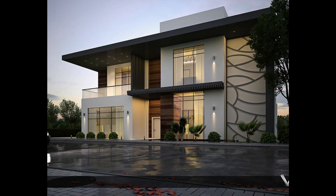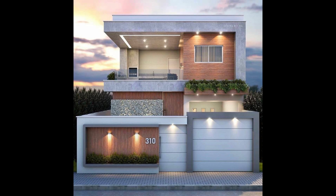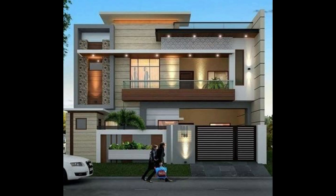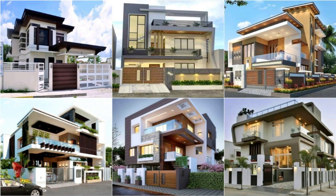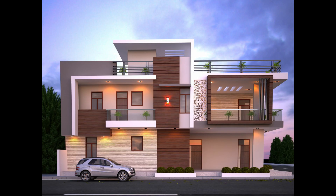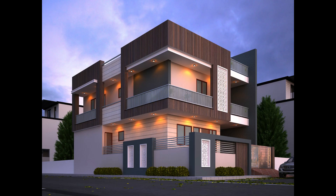Modern houses have open floor plans where one space flows into the next. The main living areas are typically open to each other, allowing plenty of natural light into deeper spaces. This also allows more space for entertaining because there aren't as many interior walls to define and restrict the space. Make sure the spaces you want to open up are next to each other. Your designer or engineer can tell you if there are structural implications of removing walls — you may need to add a beam to support the loads above the large open area.